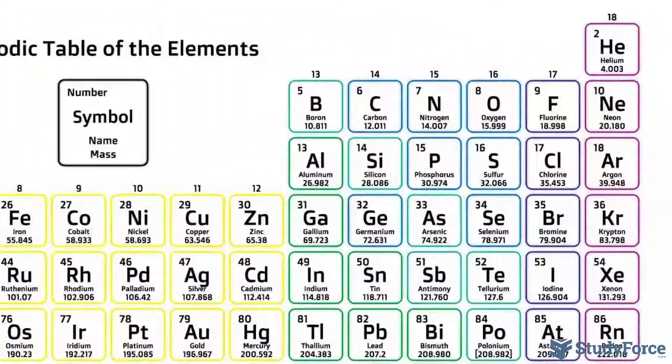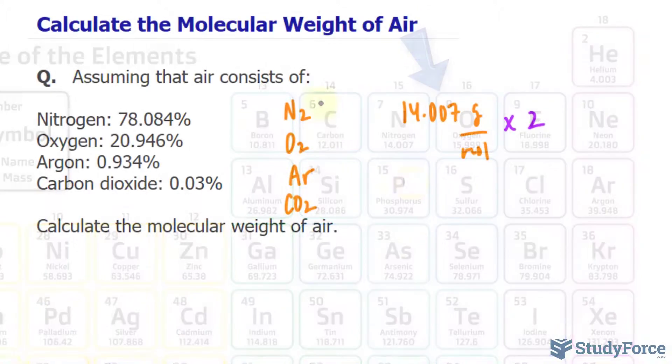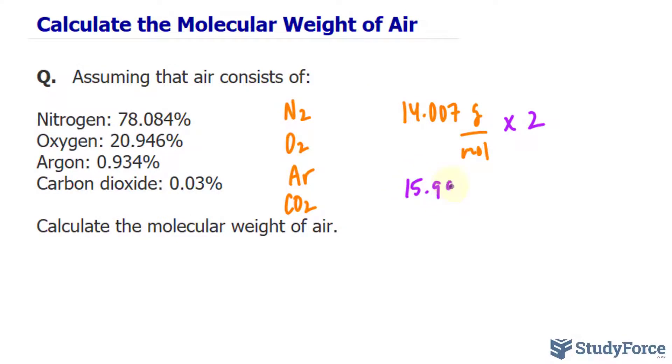The same applies with oxygen. Its molecular weight, according to this periodic table, is 15.999, just shy of 16. So 15.999 grams per mole times two. That's the calculation for oxygen.